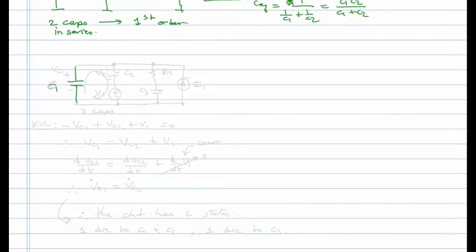Here's C1, C2, a voltage V1. And then R1, C3, and some current source. What is the order of this circuit?